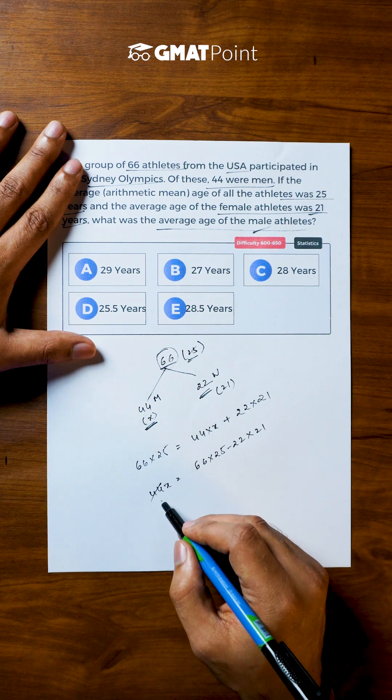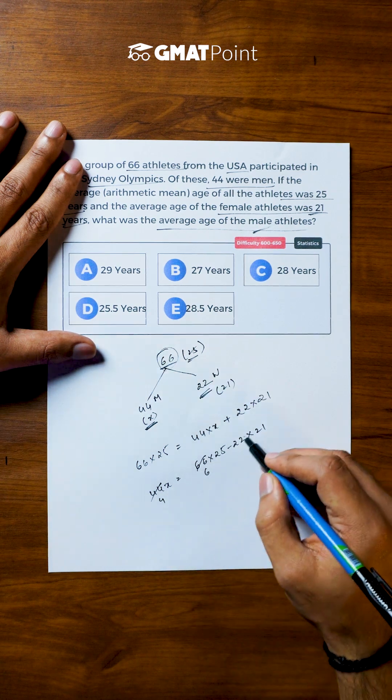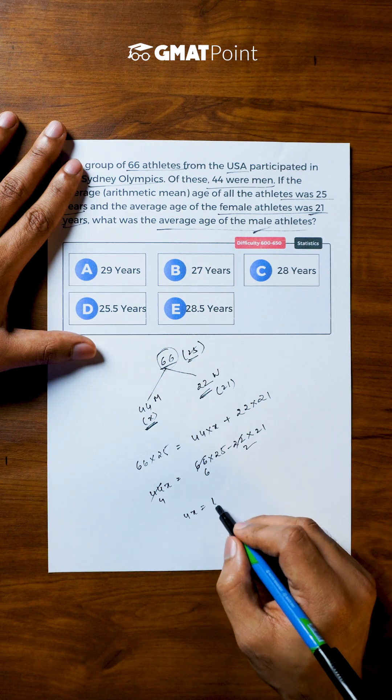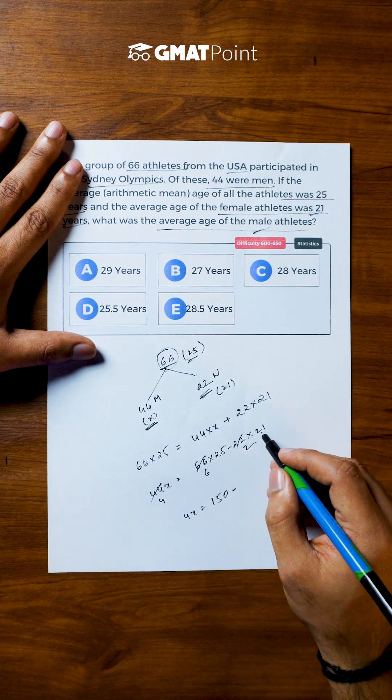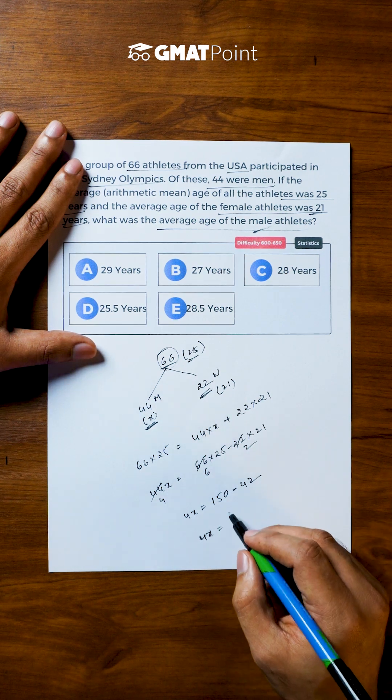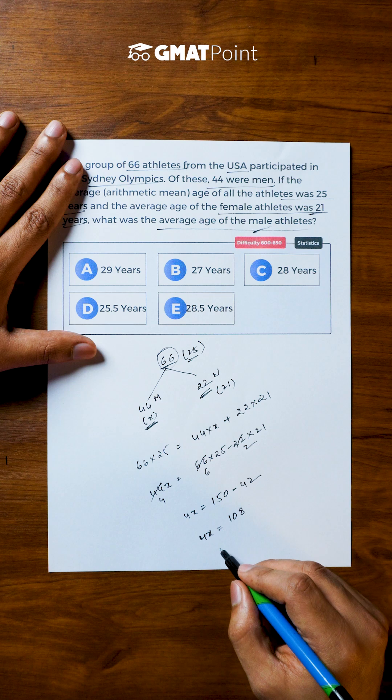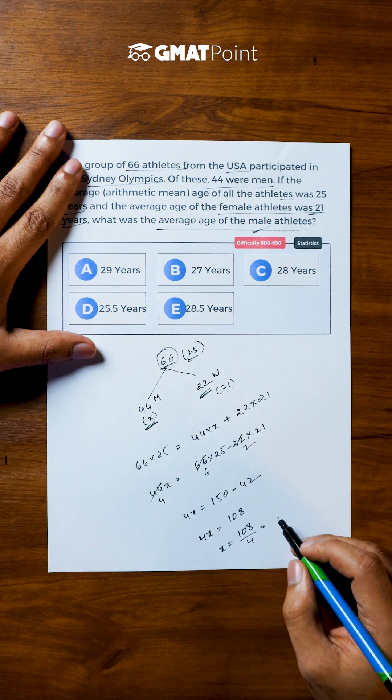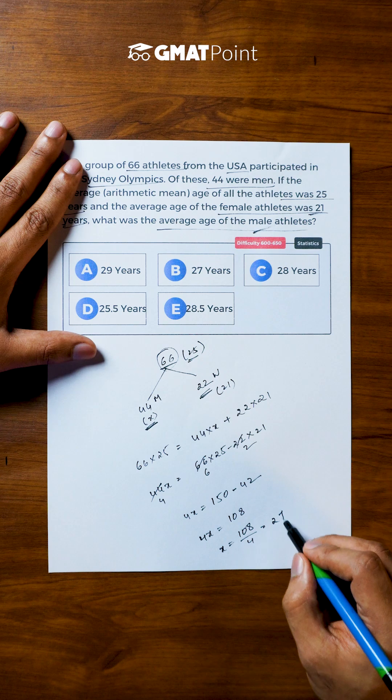So dividing the equation by 11, we get 4x is equal to 150 minus 42. And we get the value of 4x to be 108, and we get the value of x to be 108 by 4, which is equal to 27.